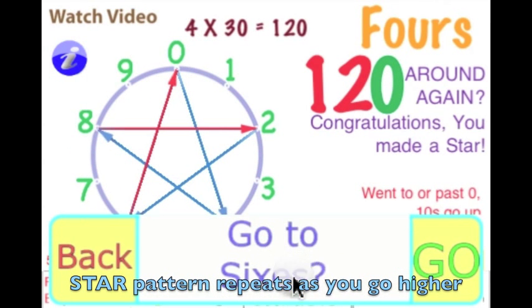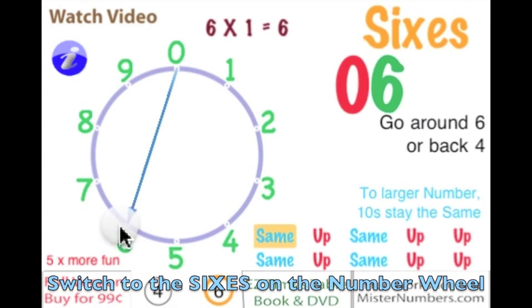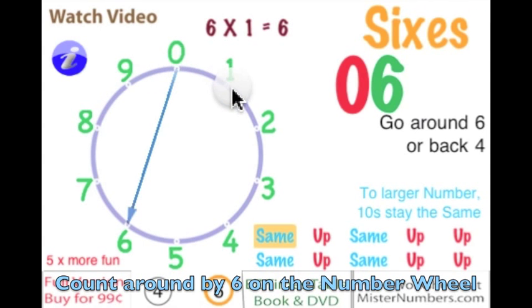Now we can go to the 6s. On the 6s, we again start at 0, count around 6, and a line forms. Count around 6 more, we go to the 2, and it's a red line because we've gone past 0.